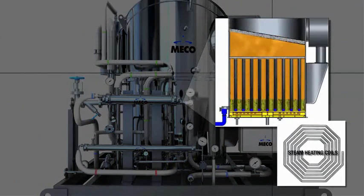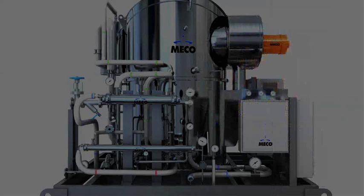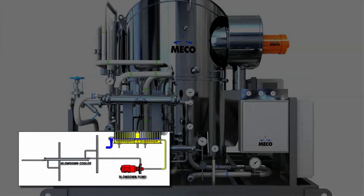Steam heating coils in the bottom of the evaporator further heat the water, causing it to percolate and boil up through the evaporator tubes, converting feed water to vapor. A portion of the feed water in the bottom of the evaporator is removed and discharged to waste to control the concentration in the evaporator.